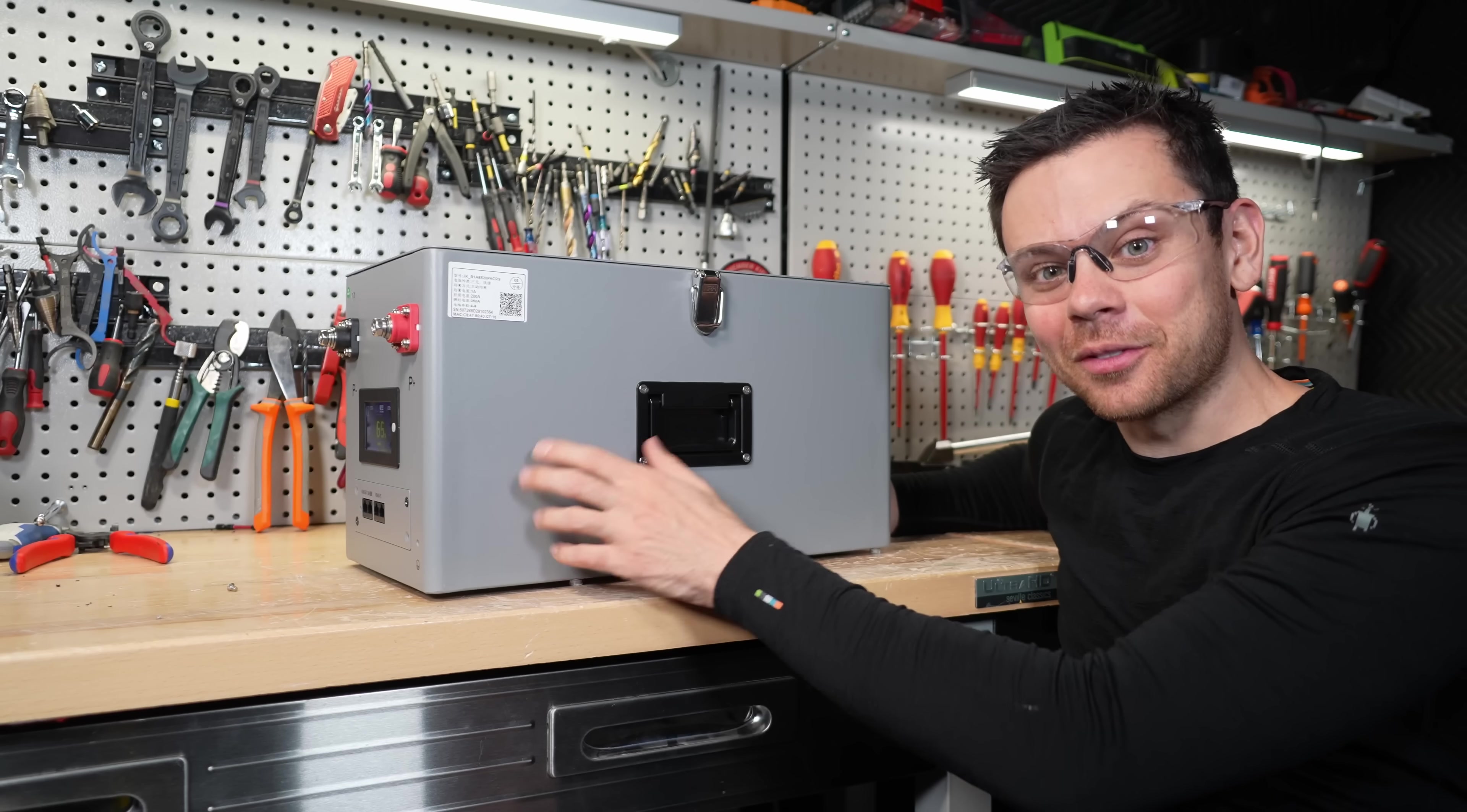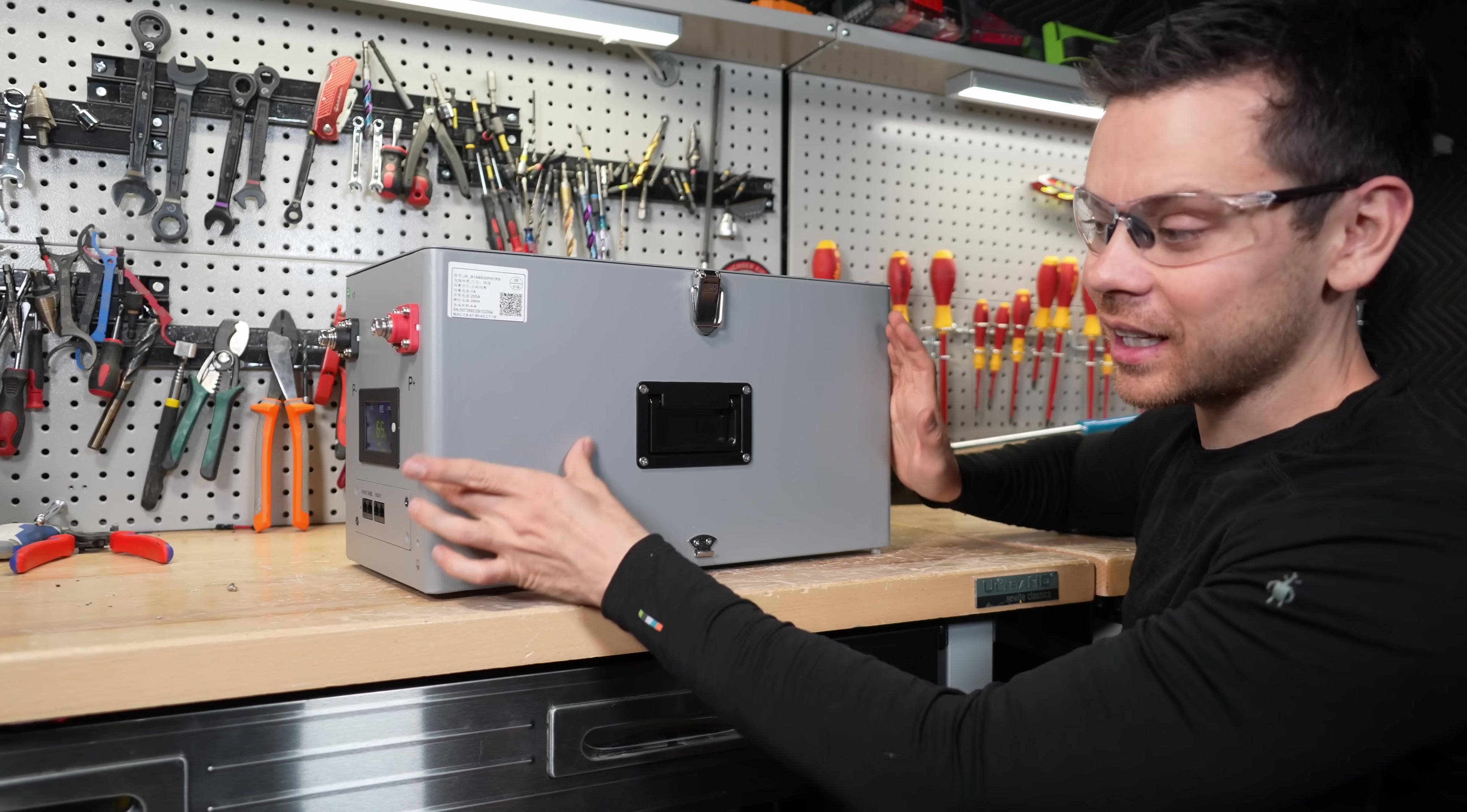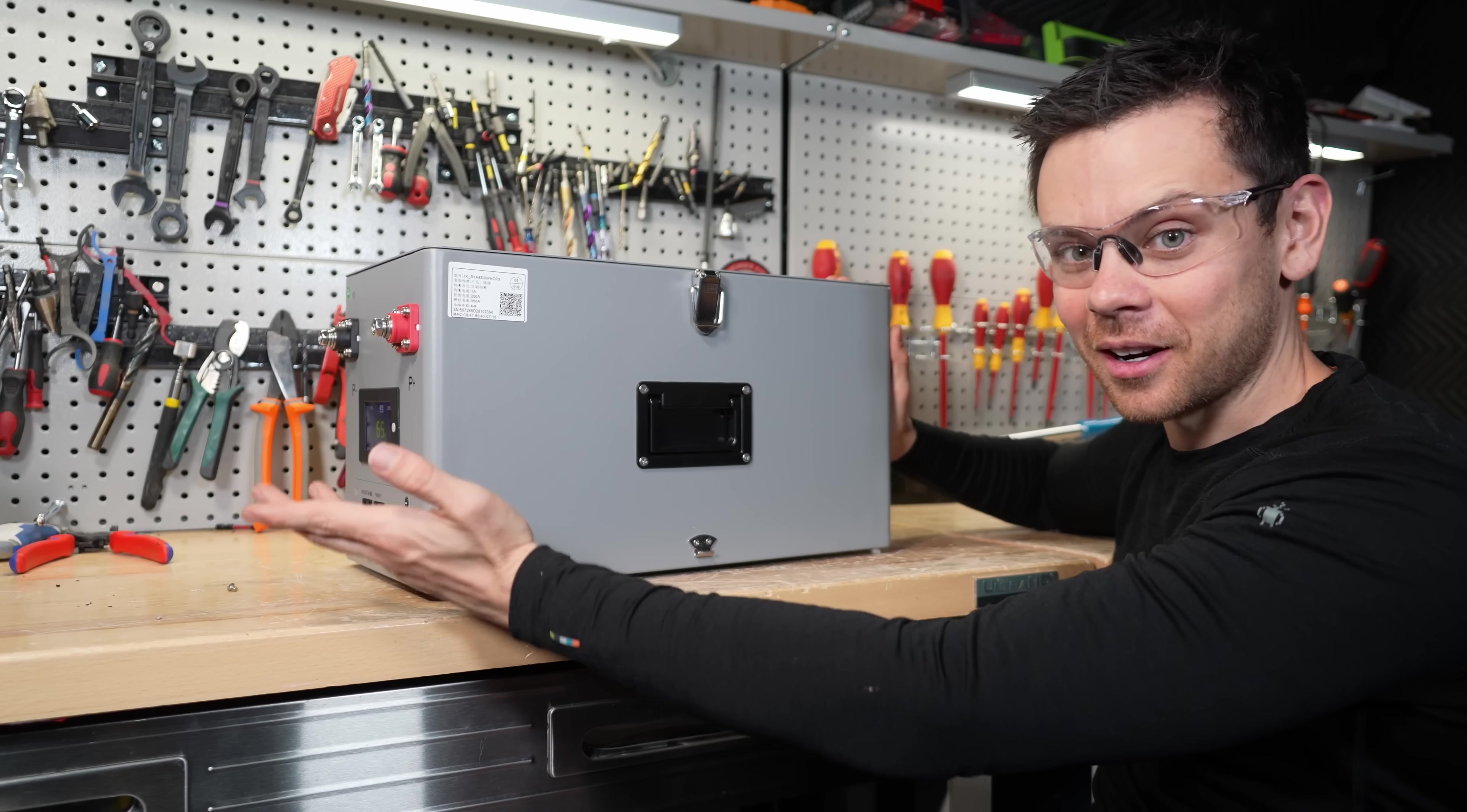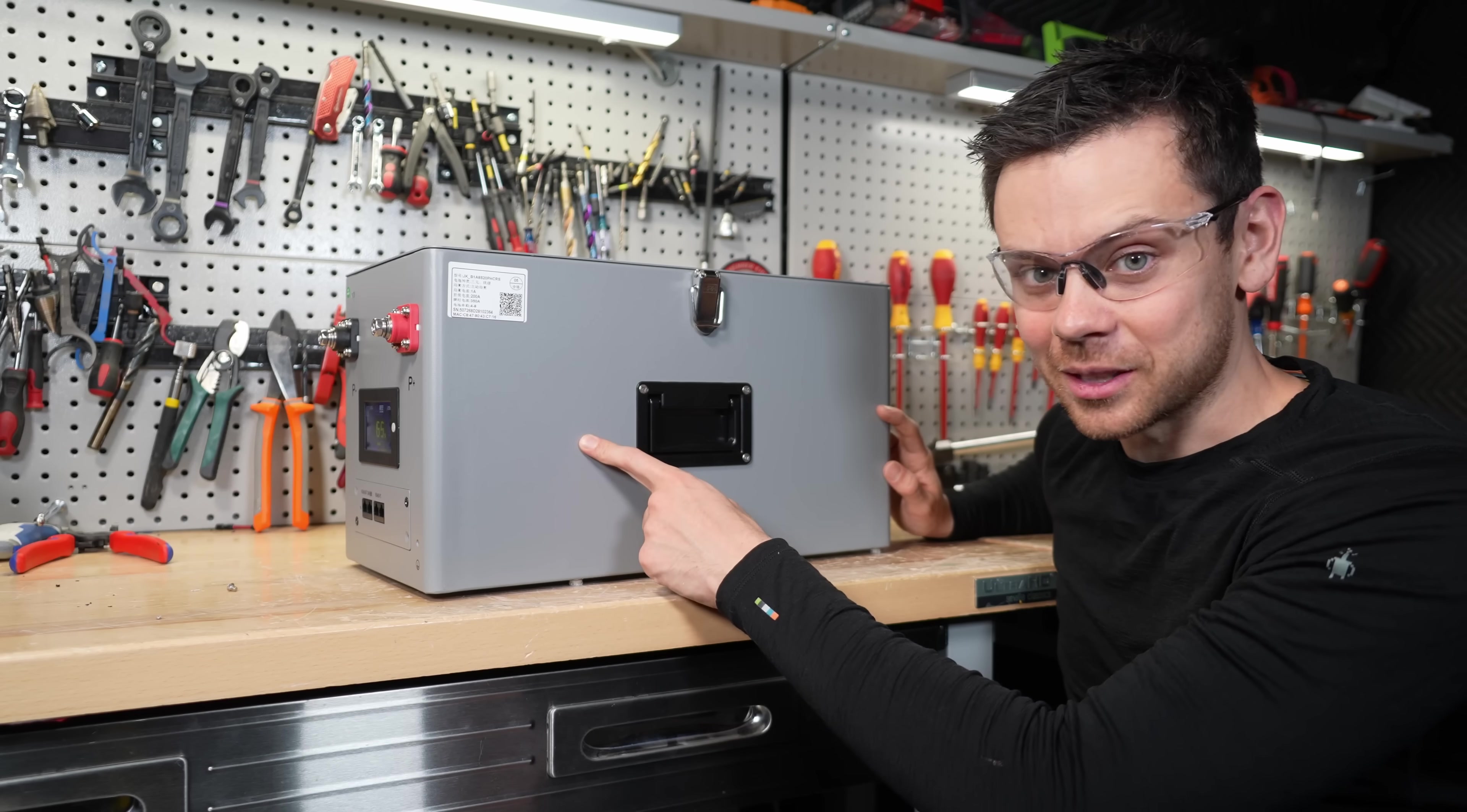Now this battery is not small for the capacity. Usually a 314 amp hour battery is about this big. But this one, it has a fuse, it has a screen, it has communication, a massive BMS, so it's quite a bit bigger than the competition. Usually this company has the best volumetric density for their capacity, but not with this model.